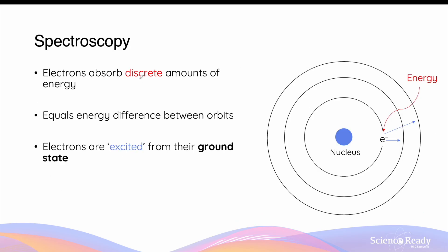Electrons can absorb a discrete or specific amount of energy to move to a higher orbit. This amount of energy is specific, as it equals the difference in energy between the orbits of different energy levels. So if an electron wants to go from the first orbit to the second orbit, the amount of energy it must absorb must equal the energy difference between these two orbits. If the electron wants to go to the third orbit instead, it needs to absorb a much greater amount of energy because the difference in the two energy levels is now greater.